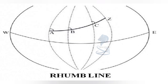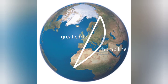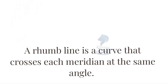Now let's discuss what a rhumb line is. A rhumb line, also known as a loxodrome, is a curve or line on the earth's surface that crosses all meridians at the same angle. It is used as the standard method of plotting a ship's course on a chart. This constant course or line of bearing appears as a straight line on a Mercator projection chart. In contrast, a great circle is the shortest path between two points along the surface of a sphere, while a rhumb line is a curve that crosses each meridian at the same angle.